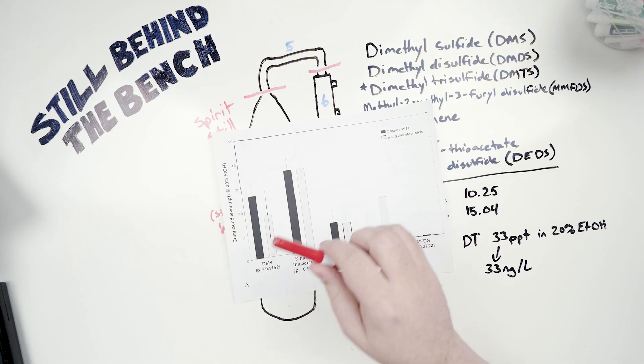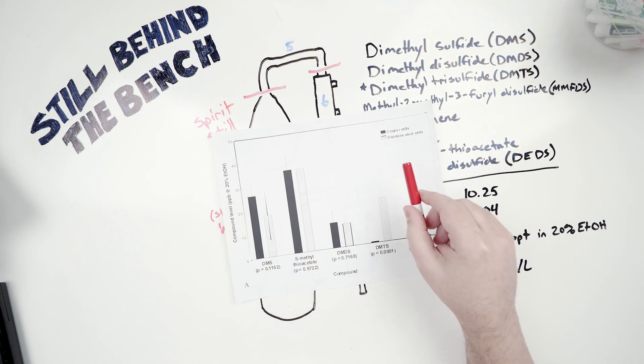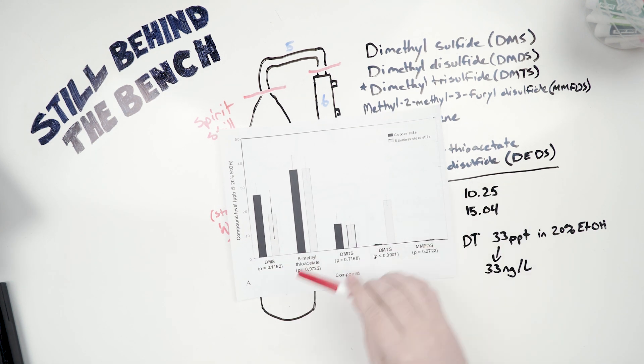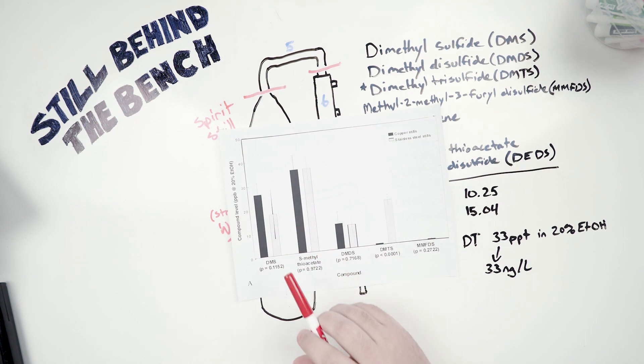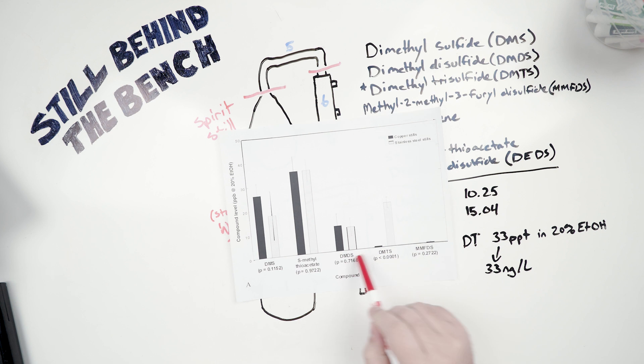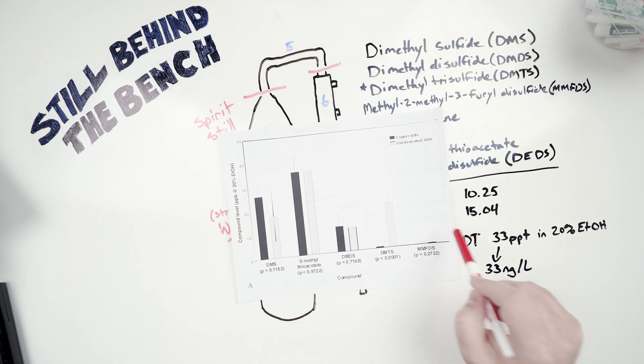So this is just for a full copper still versus a full stainless steel still. You can see here that, generally speaking, for at least three of the five compounds they show in this chart, that there's no real difference. The S-methylthioacetate, DMDS, and the MMFDS, there's really no difference between the two.